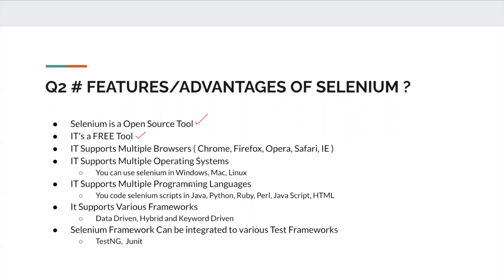Selenium supports multiple programming languages — you can code Selenium scripts in Java, Python, Ruby, Perl, JavaScript, HTML. It also supports various frameworks. You can combine Selenium with data-driven, hybrid, or keyword-driven frameworks. The Selenium framework can be integrated with test frameworks like TestNG or JUnit, using which you can run your test code and generate HTML reports. These are the different advantages of Selenium.